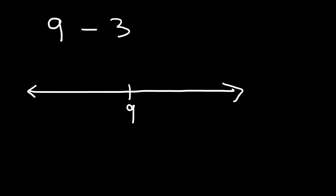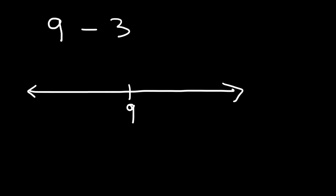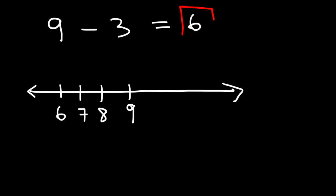Let's start with 9. If you wish to subtract, you need to travel to the left. If you wish to add, you need to travel to the right. So let's subtract 9 by 3. We've got to go 3 units to the left. So this is going to be 8, 7, and 6. Thus, 9 minus 3 is equal to 6.